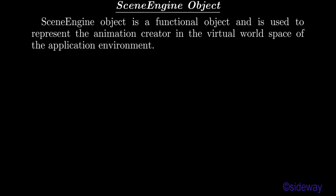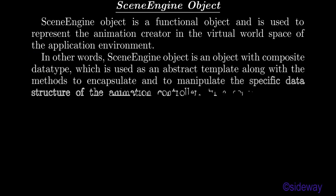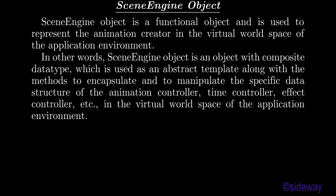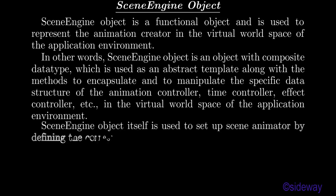Scene engine object is a functional object used to represent the animation creator in the virtual world space of the application environment. It is an object with composite data type used as an abstract template along with the methods to encapsulate and manipulate the specific data structure of the animation controller, time controller, effect controller, etc. Scene engine object itself is used to set up the scene animator by defining the corresponding attributes accordingly.